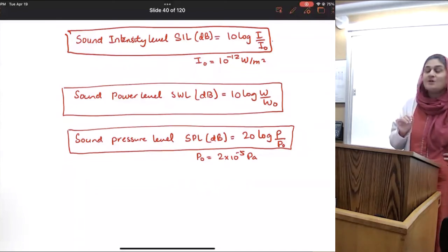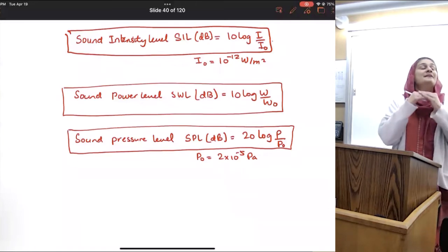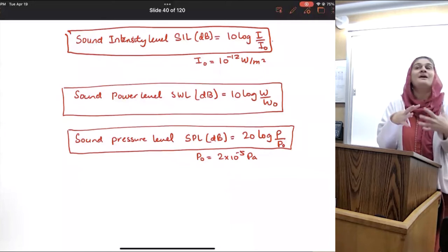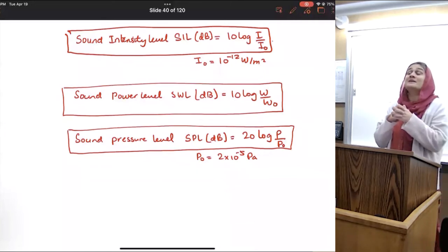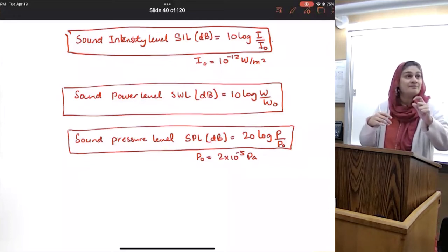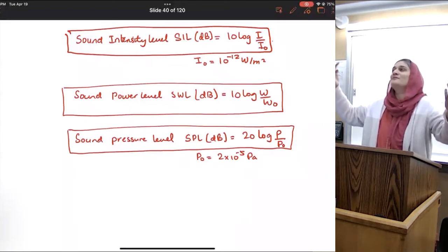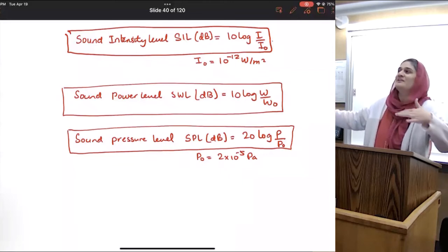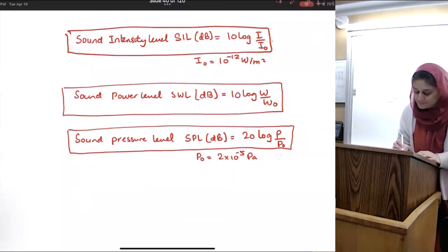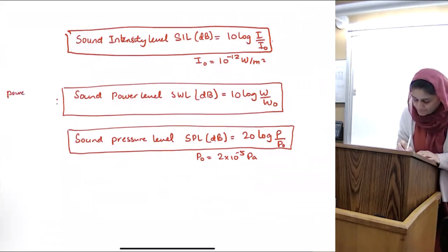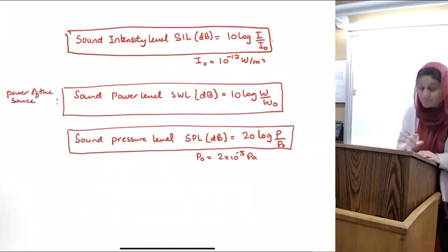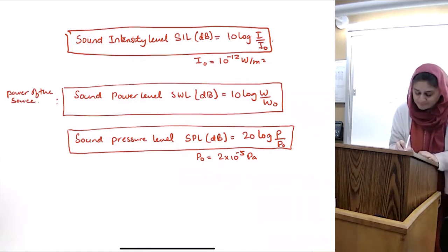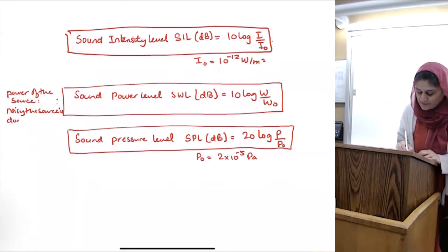So what's the difference? Sound intensity level is the level of intensity or how intense a sound is. The reason why we talk about intensity level instead of just intensity is because the numbers are very, very tiny. We needed something to make the numbers look like 10 or 12 or 15 instead of 10 to the minus 12. Sound power level is actually the power of the source, how noisy the source is. It does not depend on distance, area, or environment.